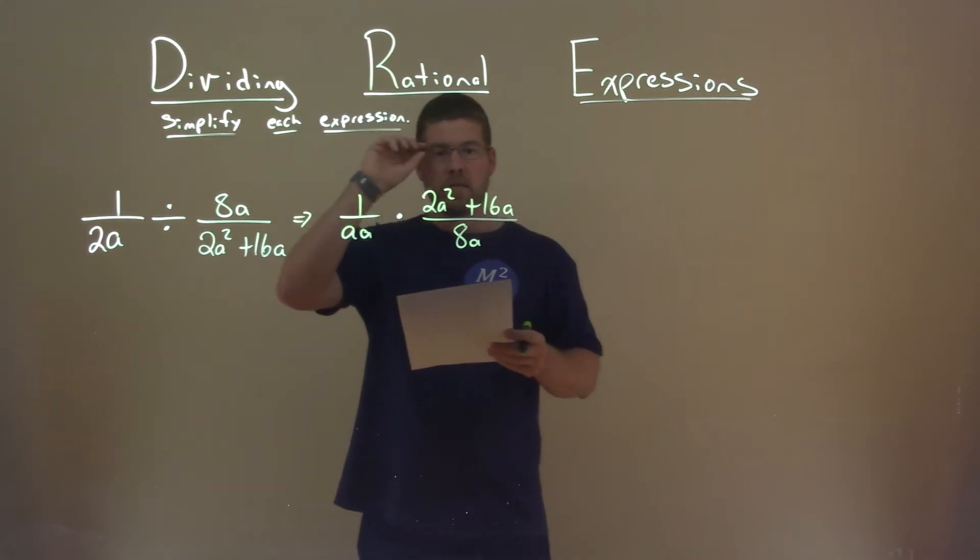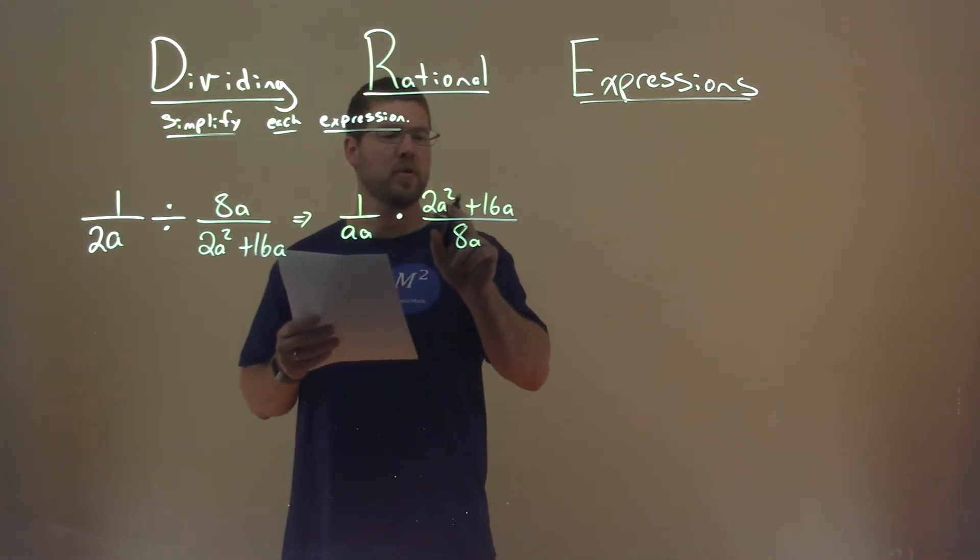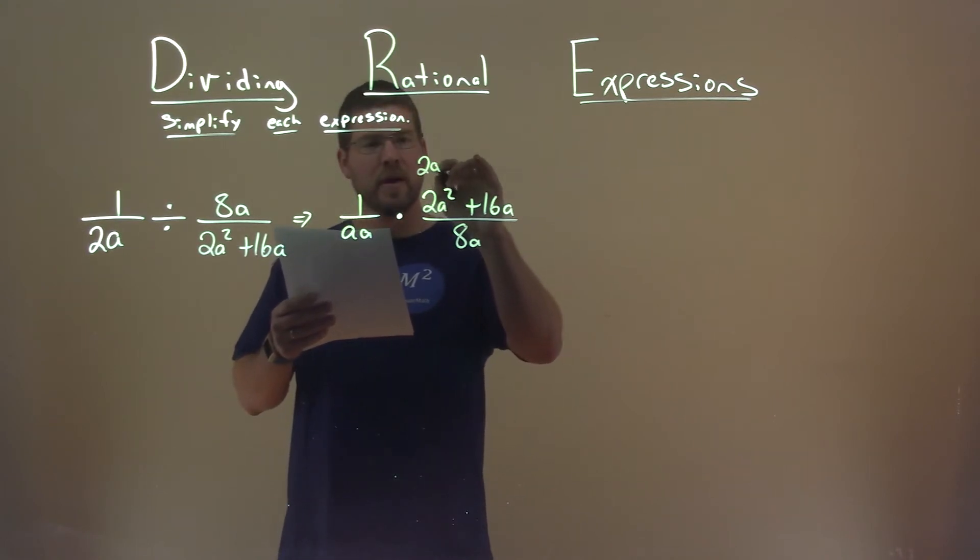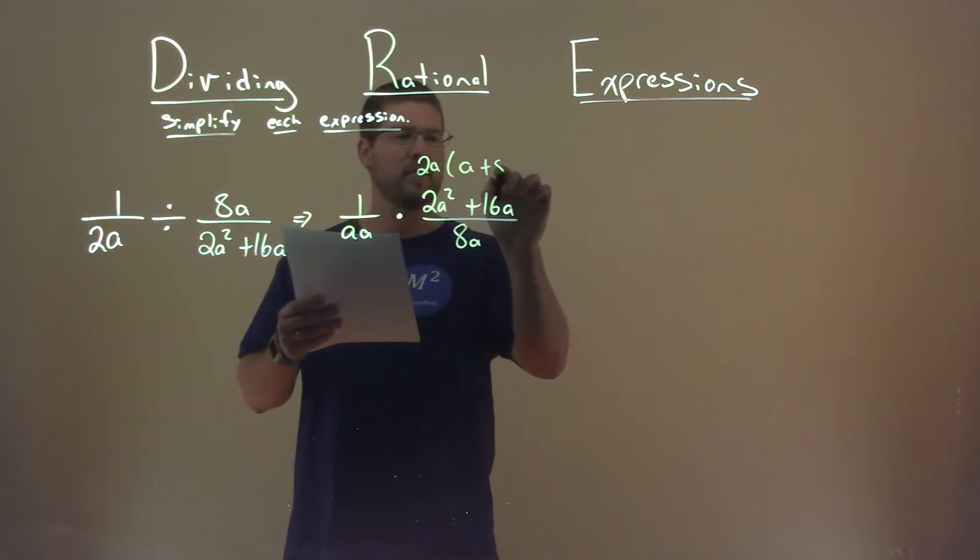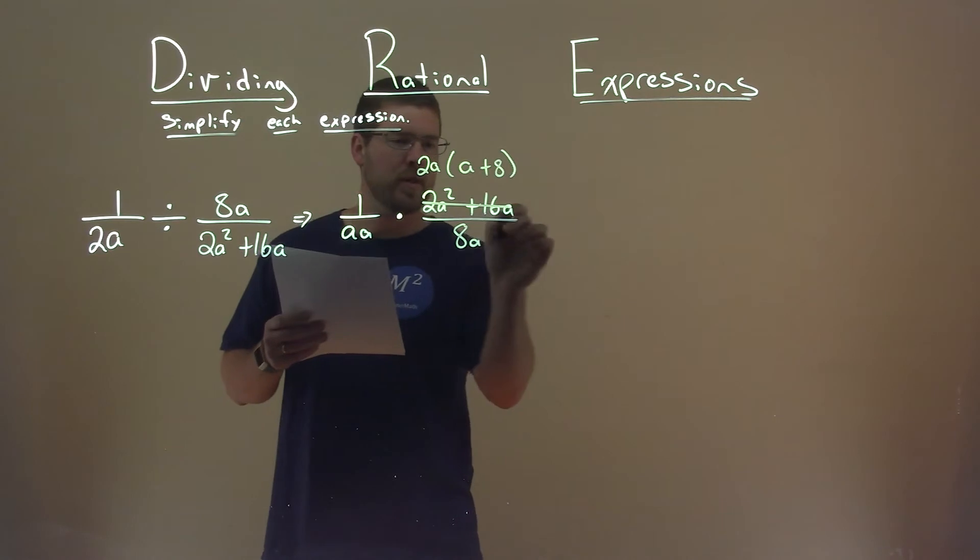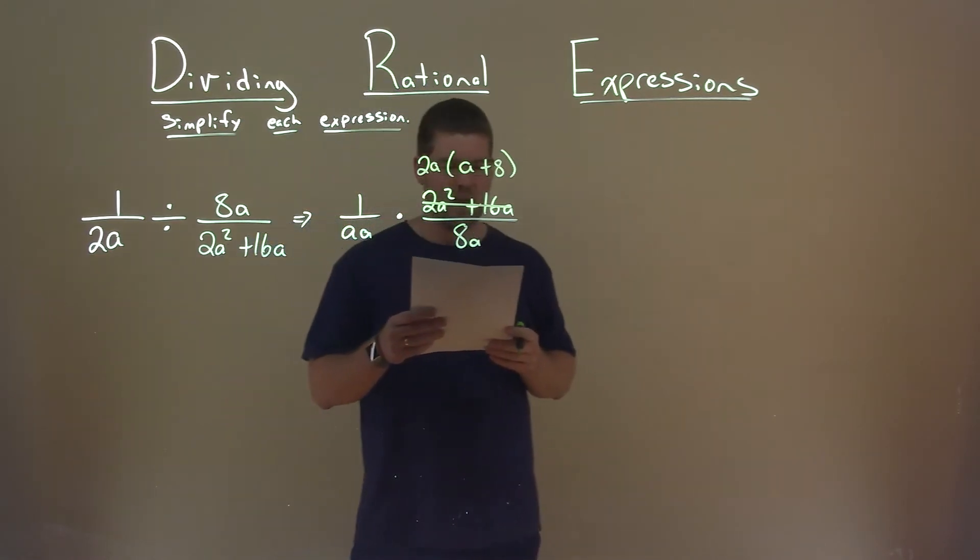Alright, so now let's factor what we can. The numerator here, I see a 2a is in both parts. So if I pull out a 2a, I'm left with an a plus 8 here. So let's replace that with 2a times a plus 8.